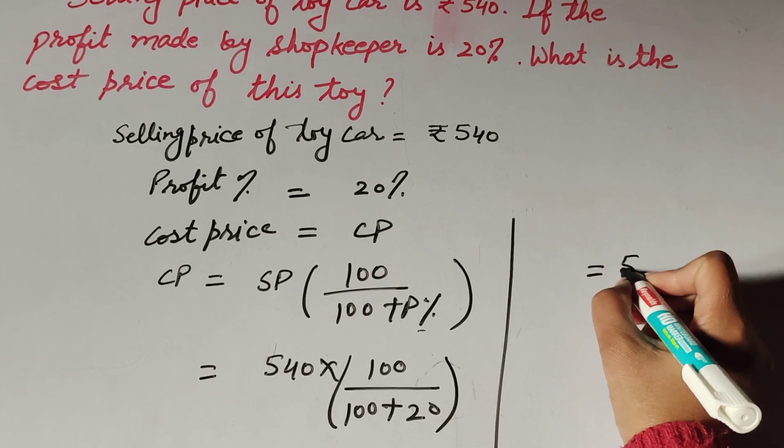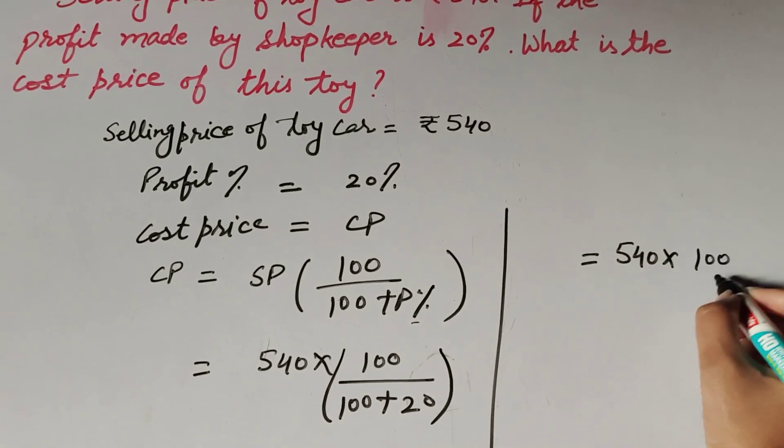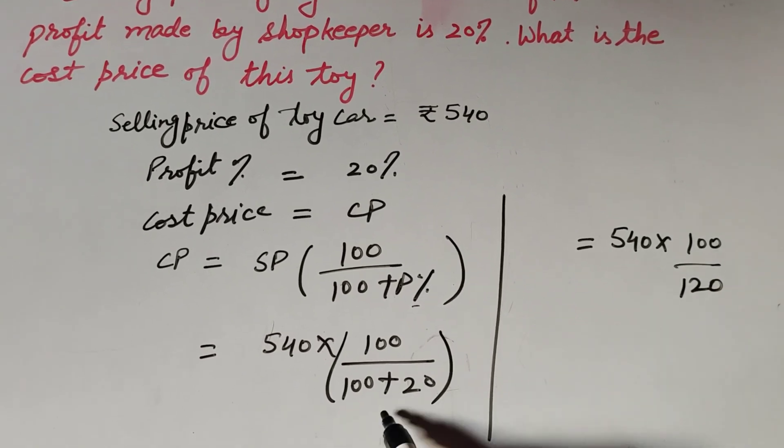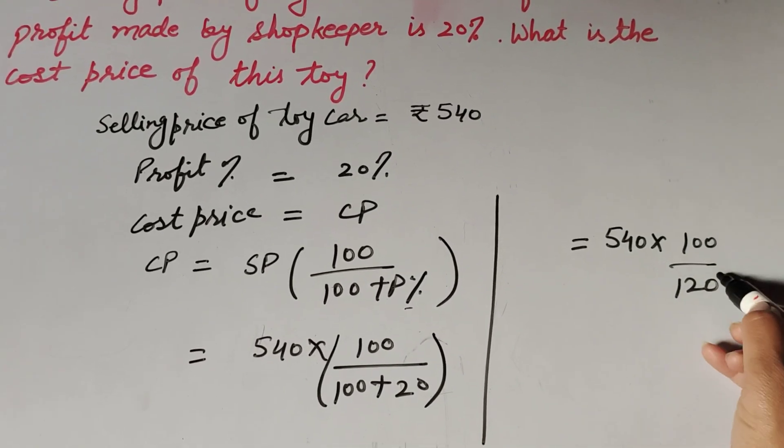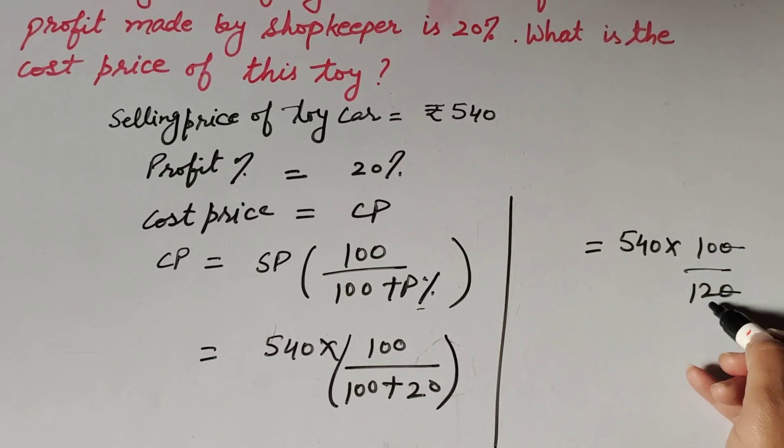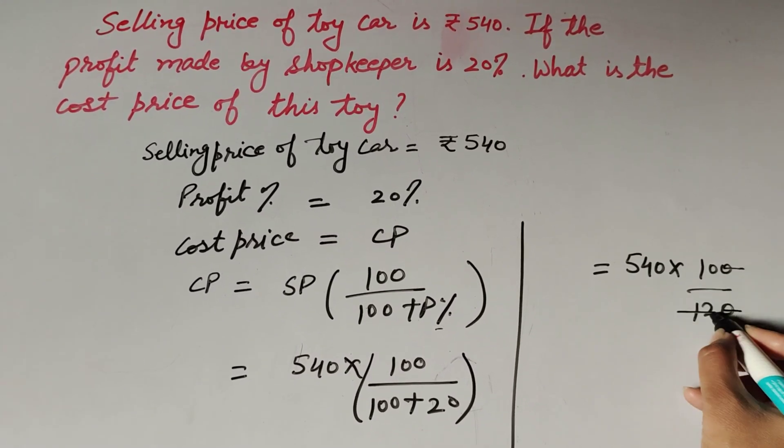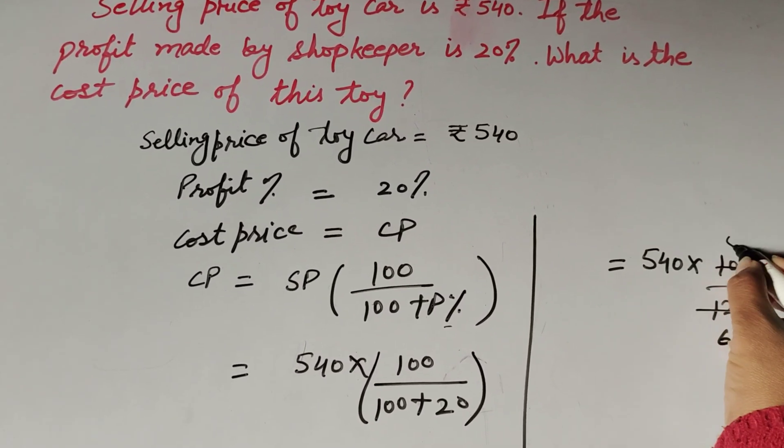So 540 multiply 100 over 120. 100 plus 20, it is equal to 120. Zero in denominator, zero in numerator, both are cancelled. 10 and 12 both are divisible on the table of 2, so we cancel them. 2 sixes are 12, 2 fives are 10.